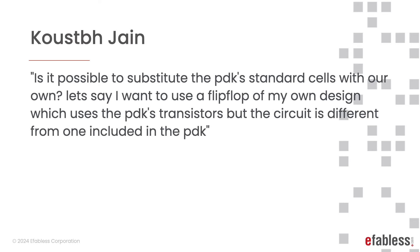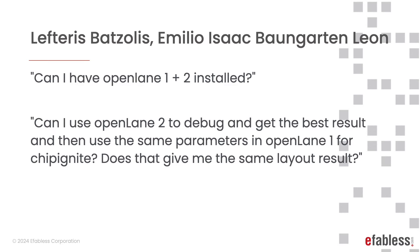Is it possible to substitute the PDK standard cells with your own? As long as you do not violate DRC rules, yes, but we cannot guarantee the functionality of custom cells — we generally do not recommend that. Can you have OpenLane 1 and 2 installed simultaneously, and use OpenLane 2 to debug then use the same parameters in OpenLane 1? Yes, the two are independent, but we make no such guarantees. While OpenLane 2 supports OpenLane 1 configurations, the outputs may be slightly different due to heuristics used in the various utilities.